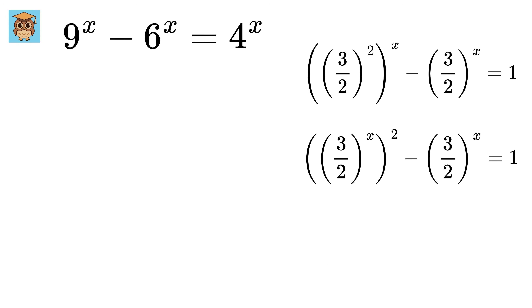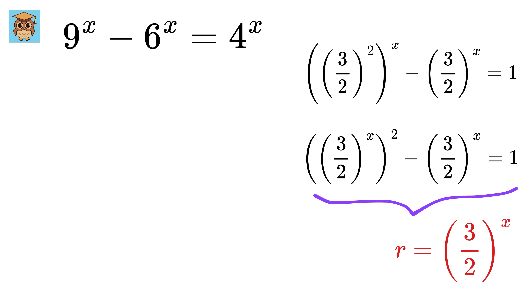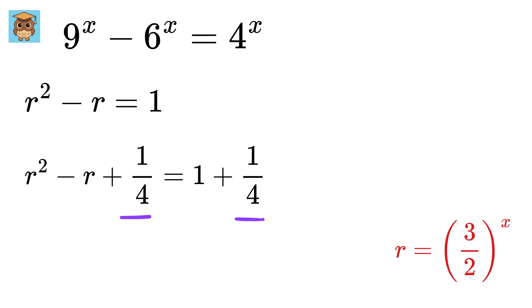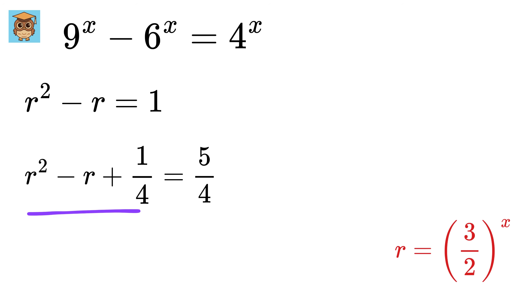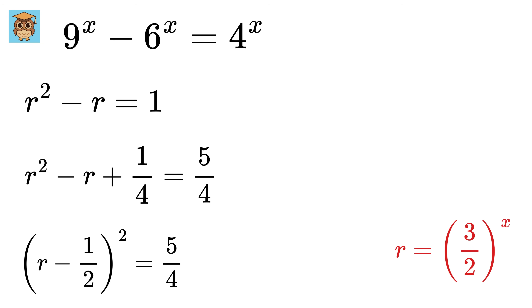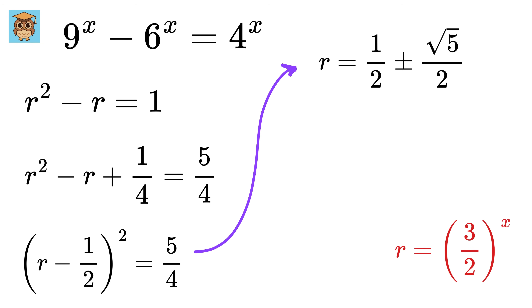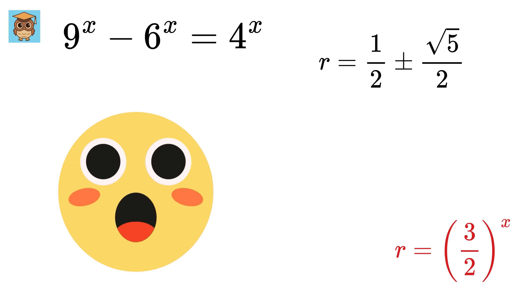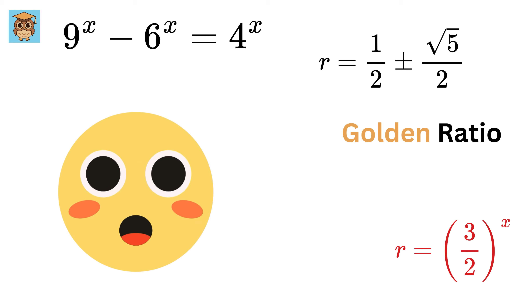We will now use substitution, where we call r as (3/2) raised to x. So this becomes r squared minus r equals 1. Add 1/4 on both sides to get 5/4. This is the same as (r minus 1/2) whole squared equals 5/4. So r equals 1/2 plus or minus root 5 over 2. What a coincidence — it turned out to be the golden ratio!